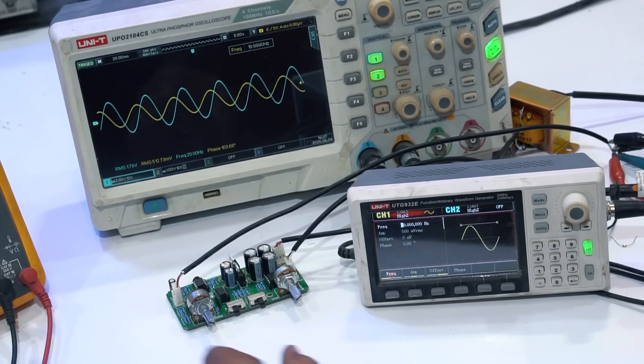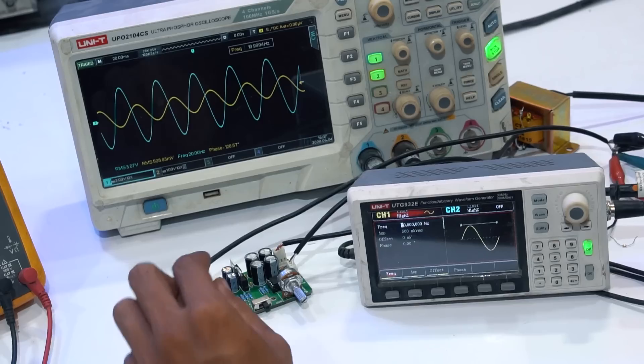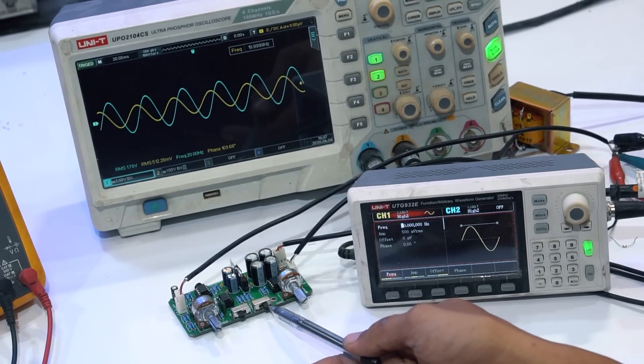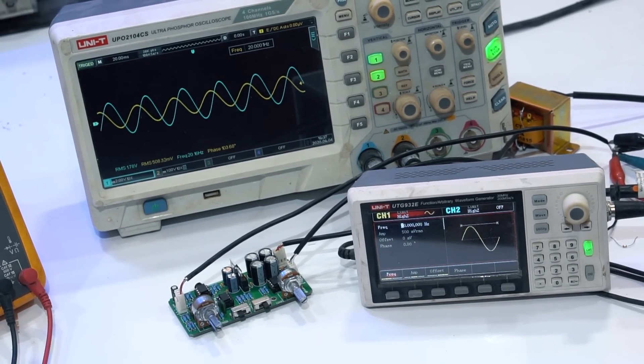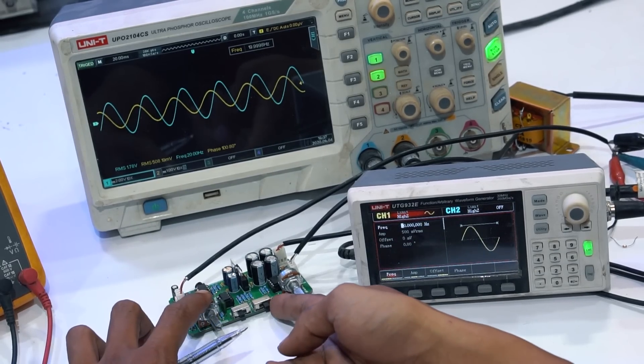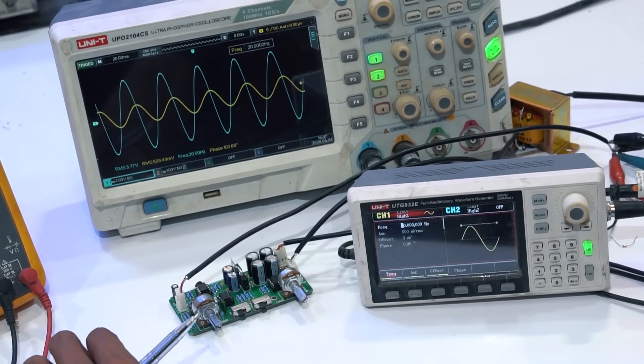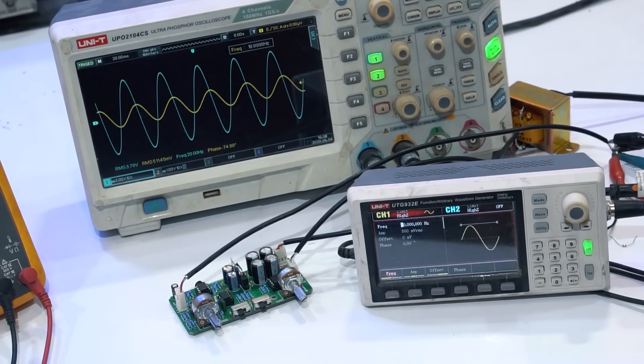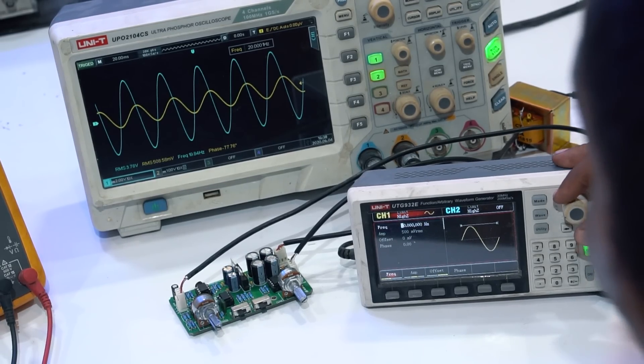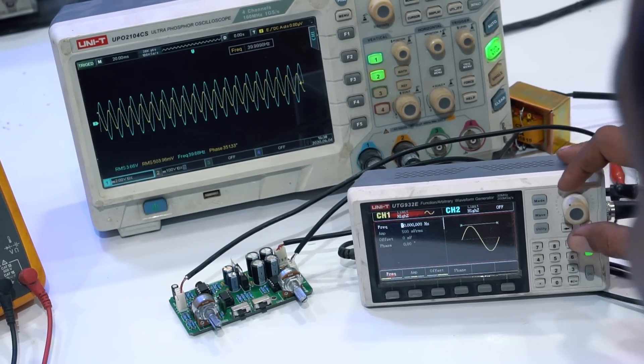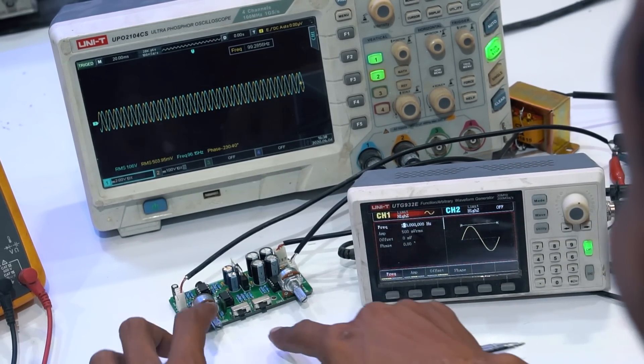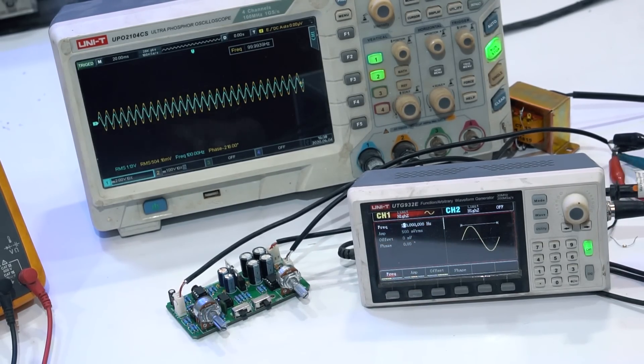And next we test the bass boost. This functions to increase gain up to 2 times. As we can see, the output amplitude is around 1.78V. If we activate the bass boost, then the output voltage will increase to 3.7V. This will make the bass sound come out more, more booming. So the bass boost functions well.